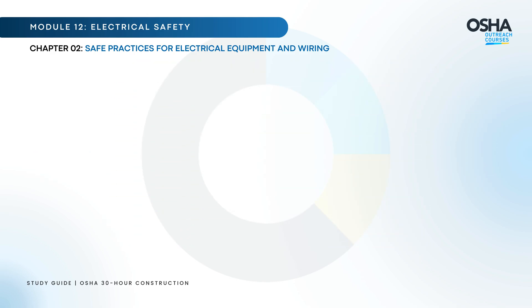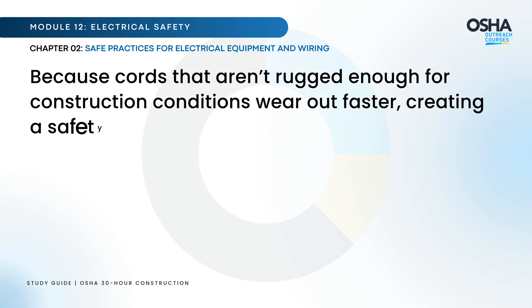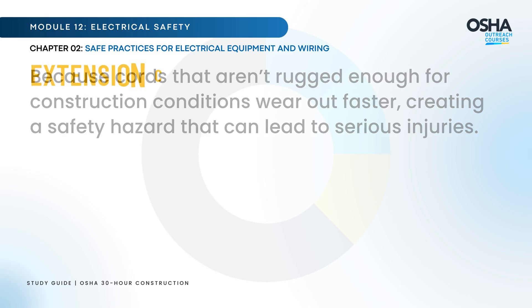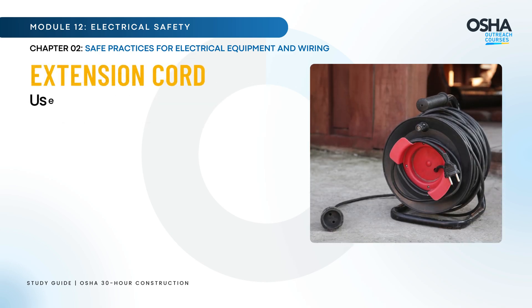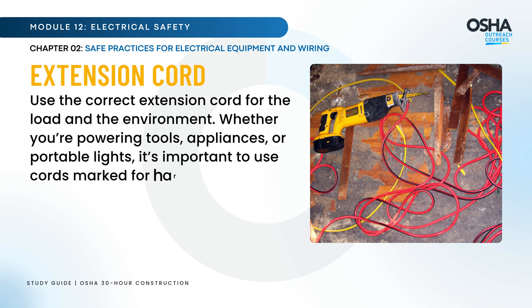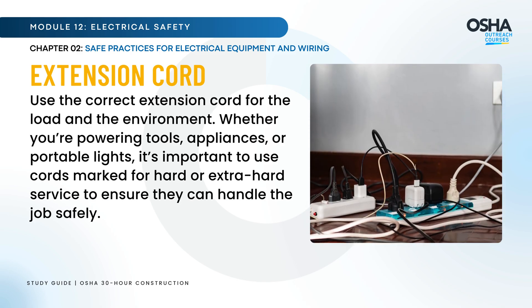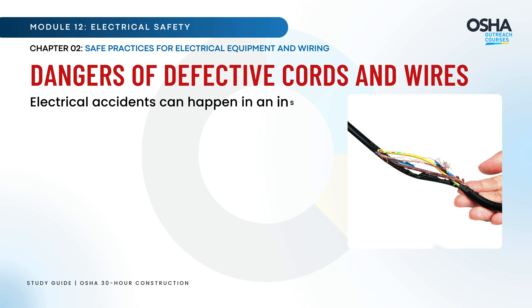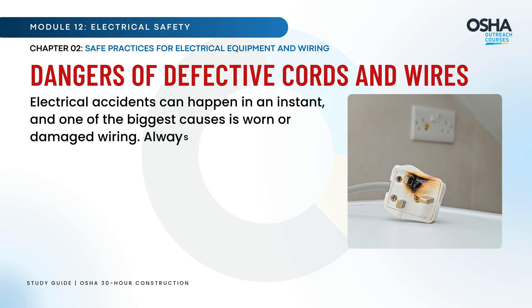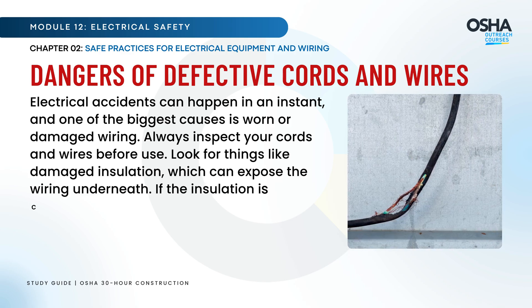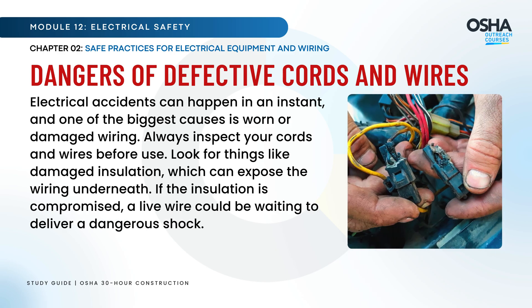Why does this matter? Because cords that aren't rugged enough for construction conditions wear out faster, creating a safety hazard that can lead to serious injuries. When it comes to extension cords, choose carefully — use the correct extension cord for the load and the environment. Whether you're powering tools, appliances, or portable lights, use cords marked for hard or extra hard service. Always inspect your cords and wires before use. Look for things like damaged insulation, which can expose the wiring underneath. If the insulation is compromised, a live wire could be waiting to deliver a dangerous shock.